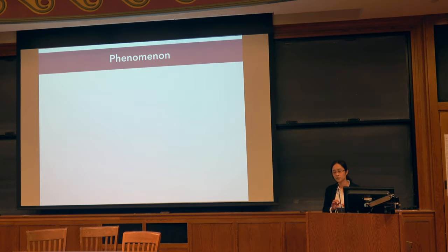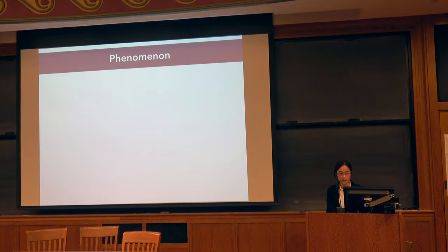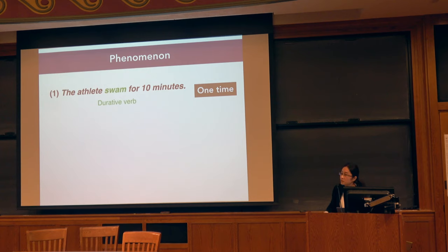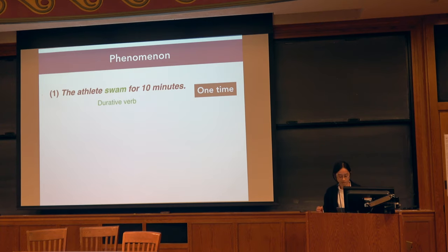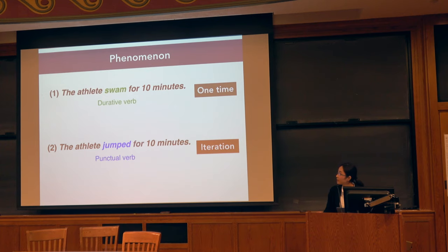In this study we examine the phenomenon of unstated or underspecified iteration. Take a look at sentence one: 'The athlete swam for 10 minutes.' The interpretation you get is probably one swimming event lasting for 10 minutes. Now compare that to sentence two: 'The athlete jumped for 10 minutes.' Same structure, but you suddenly get an iterative meaning of several jumping events during this 10-minute interval.